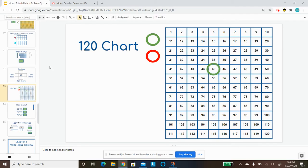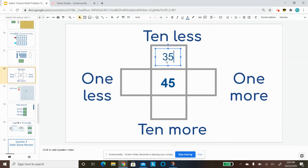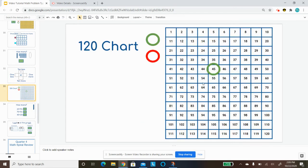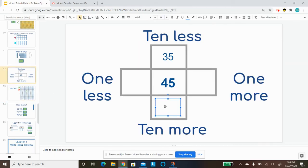10 less is 35, so I'm going to type in 35. 10 more is 55, so I'm going to type in 55.